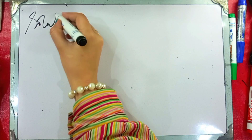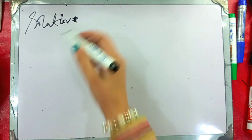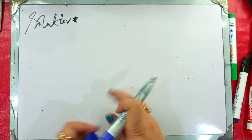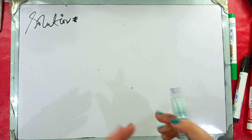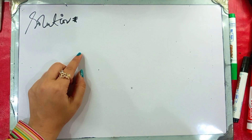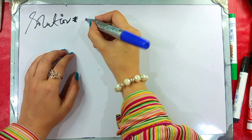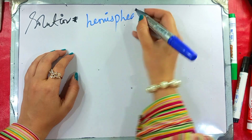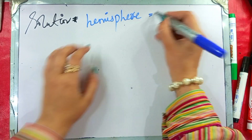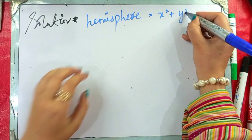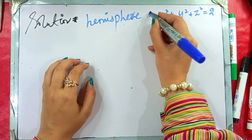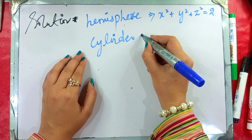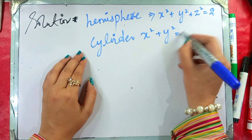Let's go to the solution. We will answer the question. First of all, we will go to the given equation. The given equation for the hemisphere is x² + y² + z² = 2. And the cylinder has the equation x² + y² = 1.